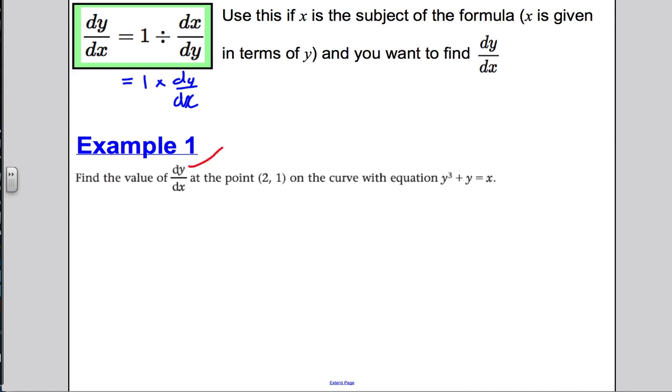It wants dy by dx, the gradient function. It wants the gradient function and it wants it actually at the point x is 2, y is 1. So at x is 2, y is equal to 1. And this is our function here. This time we have x as the subject of the formula, x is equal to y cubed plus y.